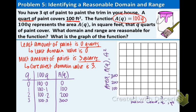Okay, we are ready to plot our points. So the first one is (0, 0). (1, 100). (2, 200). And (3, 300).